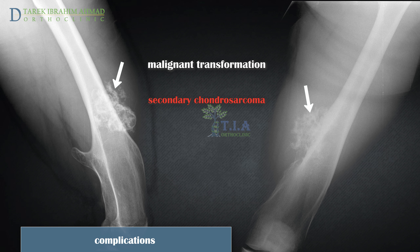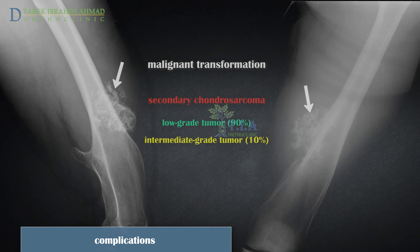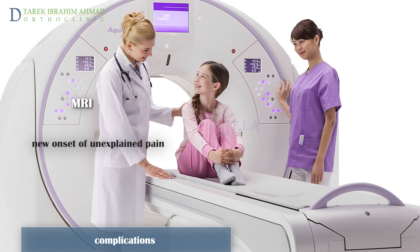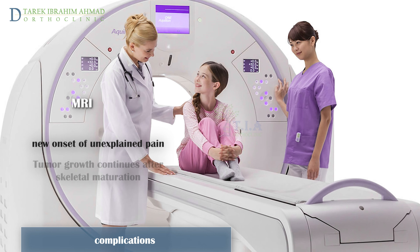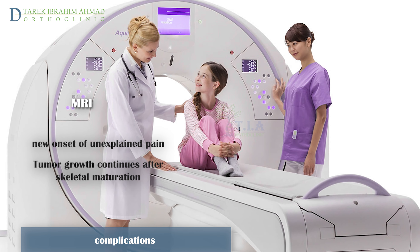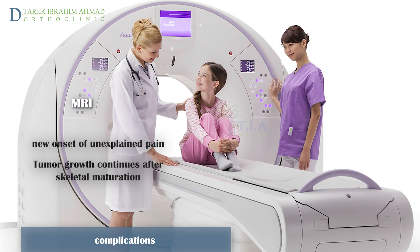The most dangerous complication of osteochondroma is cancerous transformation, which usually happens within the cartilage cap and leads to the development of secondary chondrosarcoma. Most of these tumors are low to intermediate grade, which is usually not an aggressive type, but warrants removal regardless. Every patient with a new onset of unexplained pain near a pre-existing osteochondroma, or whose tumor has continued to grow after the skeleton has stopped growing, should undergo imaging — preferentially MRI — to exclude secondary chondrosarcoma.